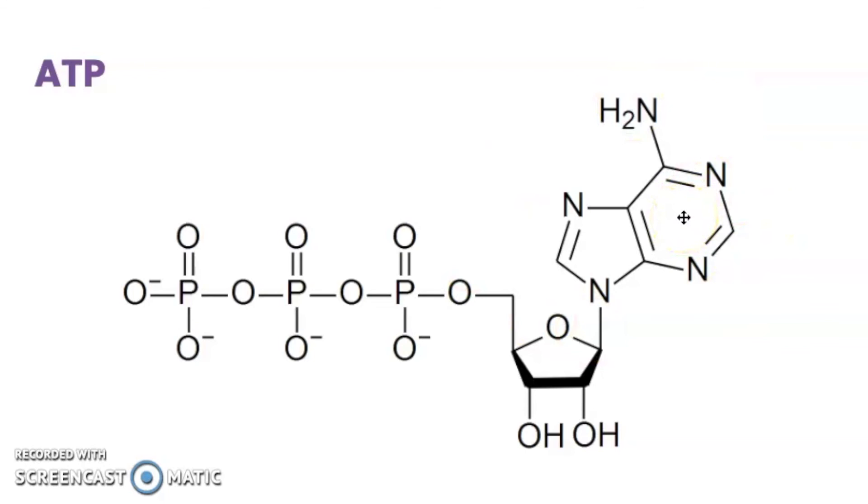But unlike DNA or RNA, ATP has three phosphate groups attached to the sugar. And this is also a ribose sugar. And energy is formed from ATP when these phosphate groups are broken. And we get adenosine diphosphate instead of triphosphate.